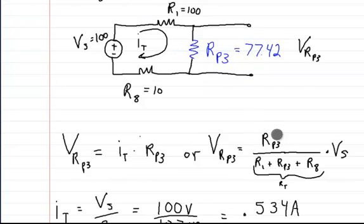In this case, you put RP3 up here, and all the resistors underneath it times the voltage of the source. If I wanted to solve for the voltage across this resistor, I would put R1 up here, and everything else would be the same. Or if I wanted to solve for the voltage across R8, I would just put R8 up here. It would still be R1 plus RP3 plus R8 times VS.